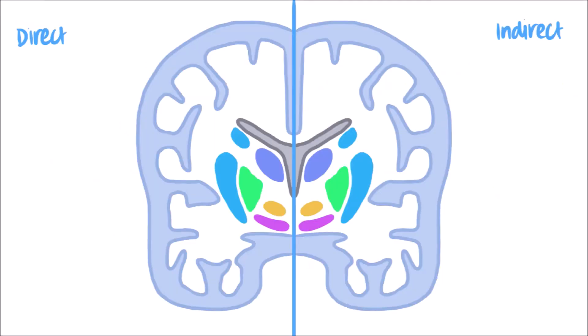Let's look at these two pathways side by side. For the direct pathway, the motor cortex stimulates the striatum. The striatum then sends inhibitory impulses directly to the internal globus pallidus, which usually inhibits the thalamus. This increases the excitatory impulses sent back to the cortex by the thalamus. Meanwhile, dopamine released from the substantia nigra can also excite the direct pathway.